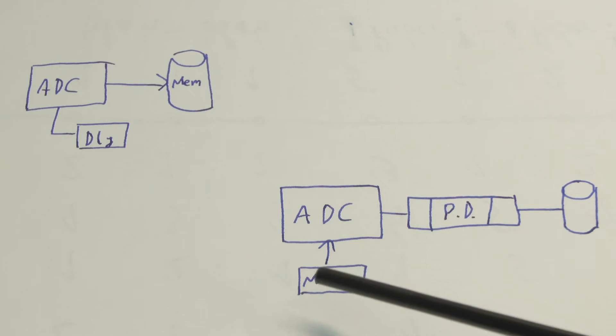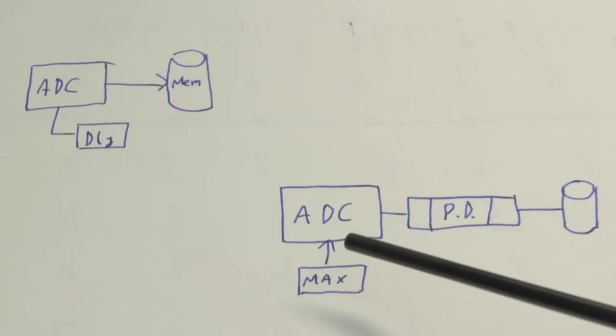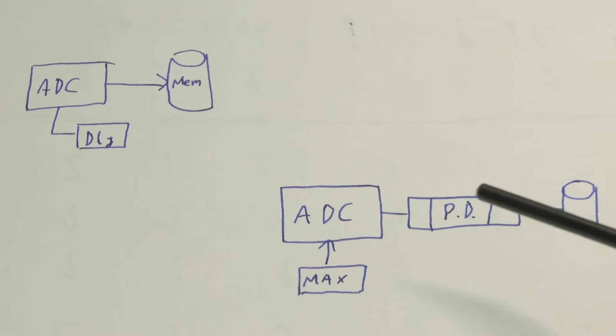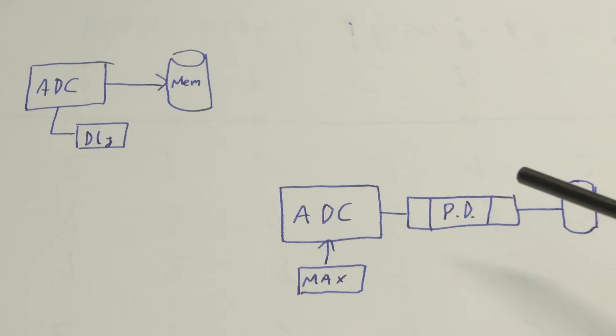Peak detect solves it in a more intelligent fashion. Namely, the ADC is always running at its maximum sampling frequency and the data is being reduced in an intelligent process, namely called peak detect. And how this peak detect process works, we are now going to see in an example frame.